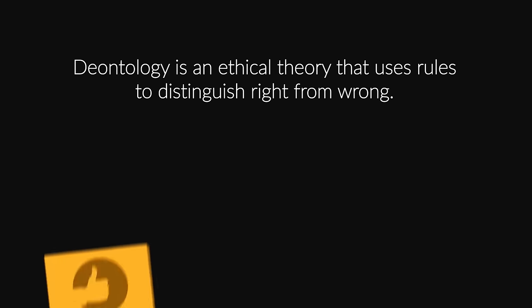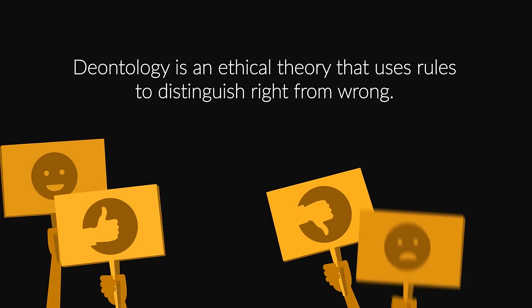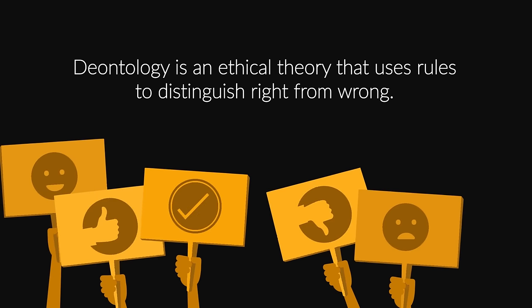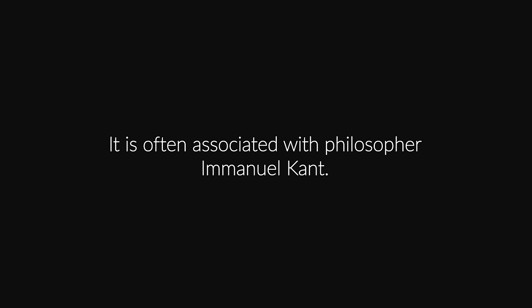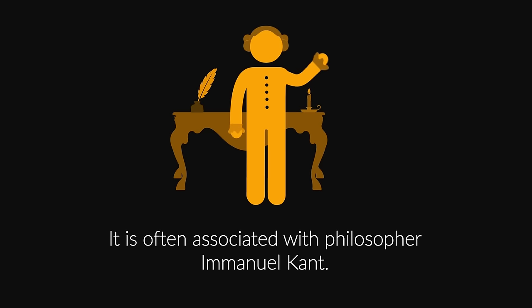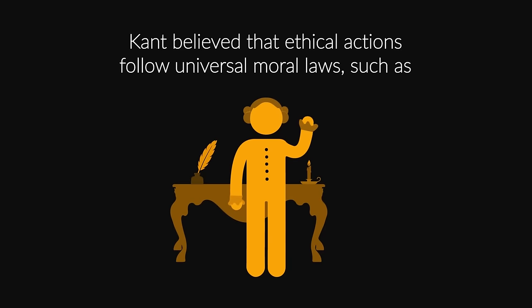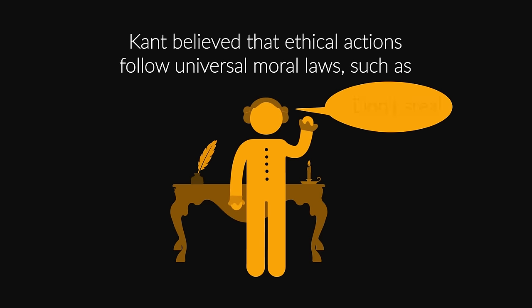Deontology is an ethical theory that uses rules to distinguish right from wrong. It is often associated with philosopher Immanuel Kant. Kant believed that ethical actions follow universal moral laws, such as don't lie, don't steal, don't cheat.